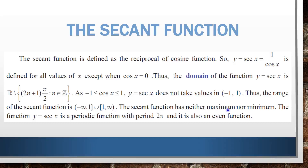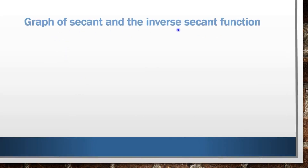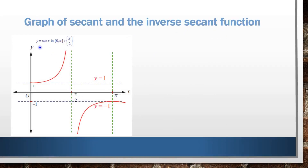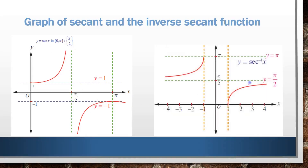The secant function has neither maximum nor minimum. The function y = secant x is a periodic function with period 2π and it is also an even function, just like cosine x. Looking at the graph of secant and the inverse secant function: the graph of secant x is in the interval 0 to π except π/2, and the curve lies only in the first and fourth quadrants. For the inverse secant function, the codomain is 0 to π, and the curve lies only in the first and second quadrants.